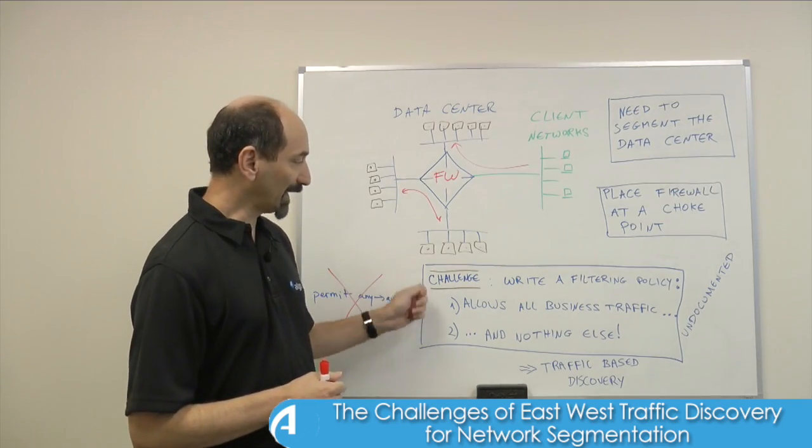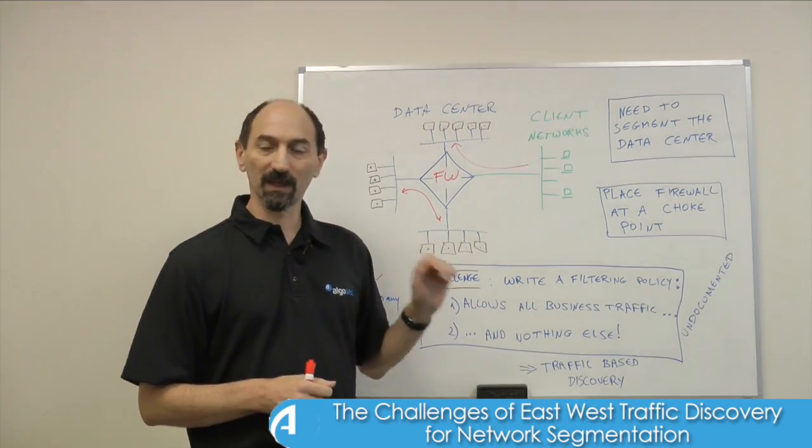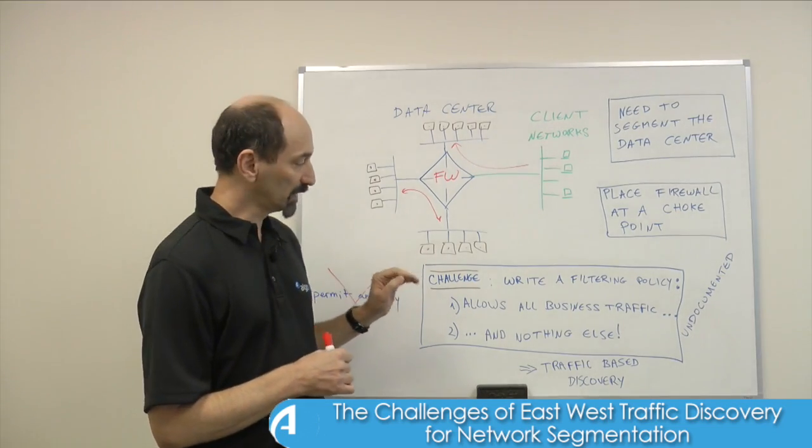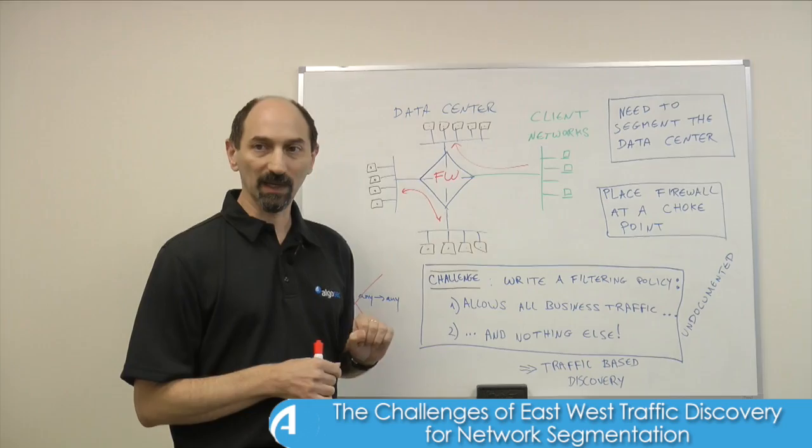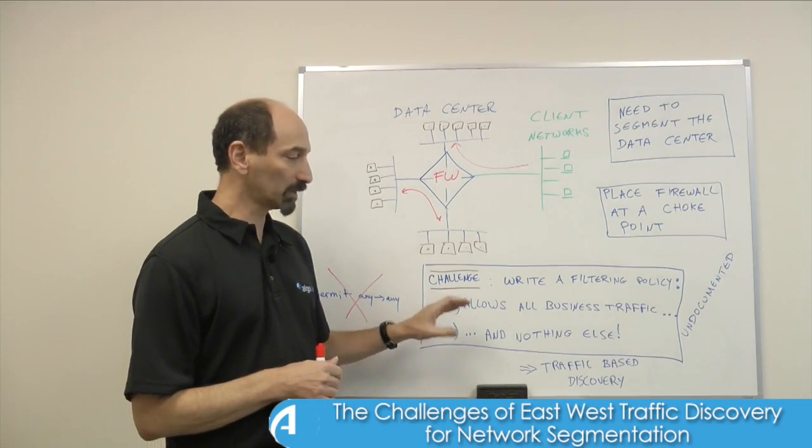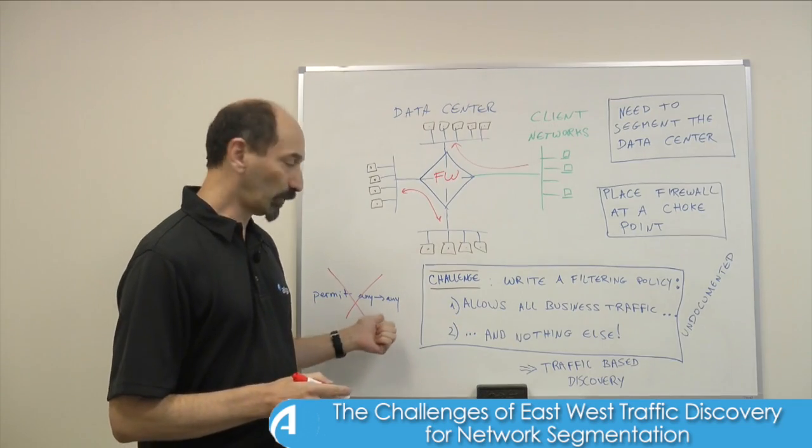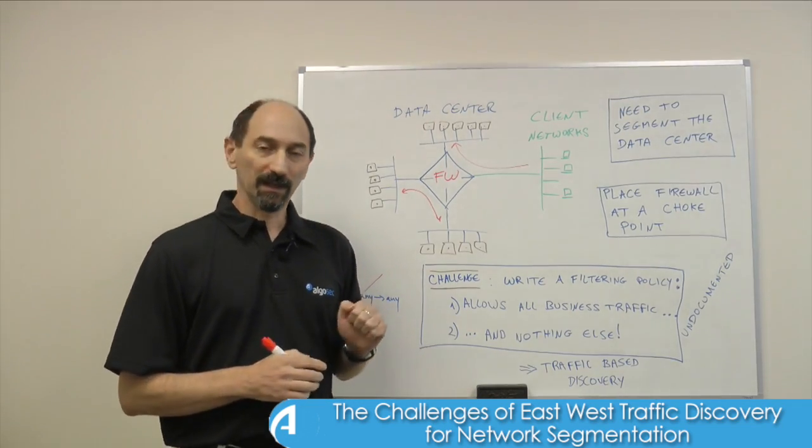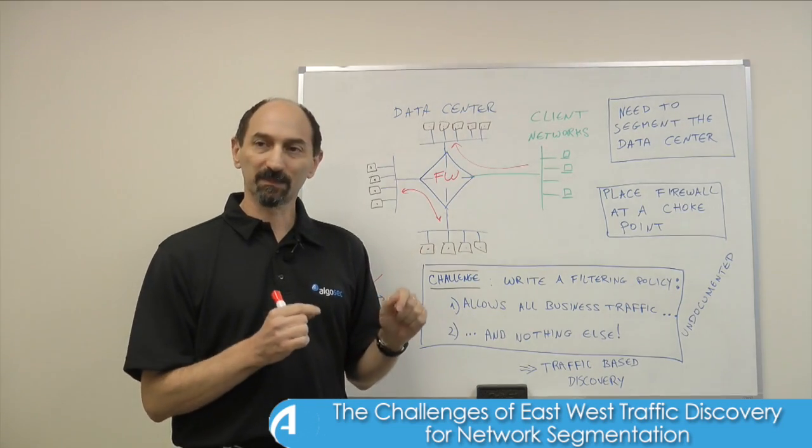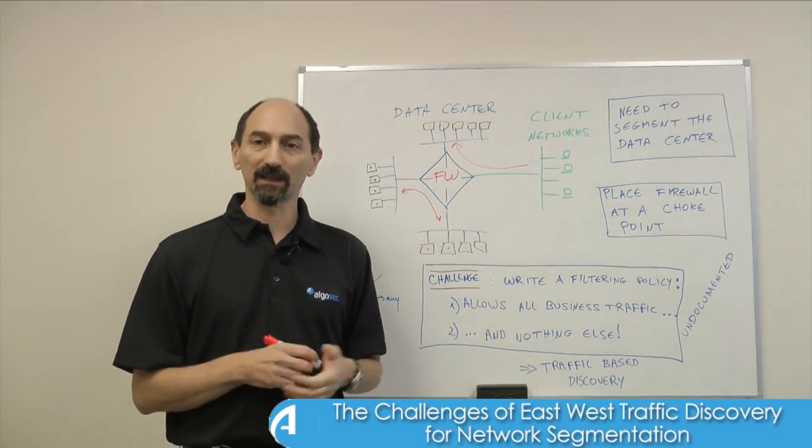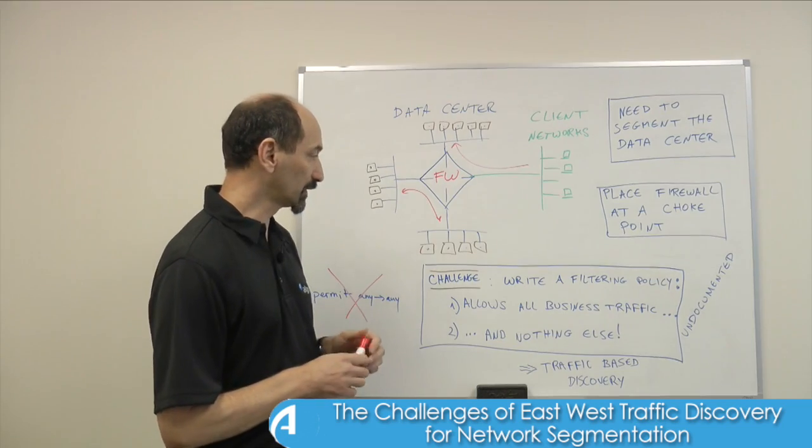You need to, on the one hand, identify all the business traffic and write firewall rules capturing precisely that traffic. On the other hand, you want to limit yourself not to be too broad so that you avoid the any-any rules and you have something specific that will block any kind of malicious traffic trying to go through.